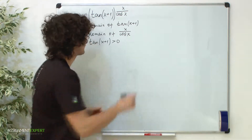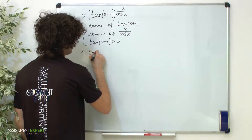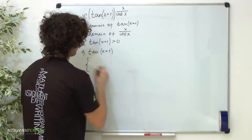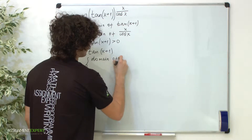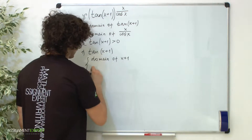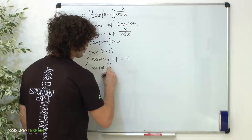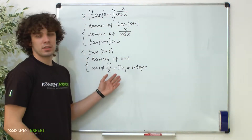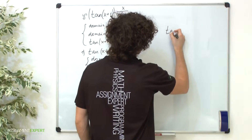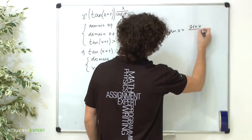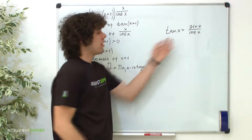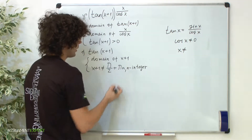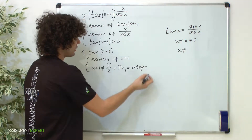Now let's consider these conditions. The first one is the domain of tangent of x plus 1. To find this domain we need to consider a system with two conditions: the first condition is the domain of x plus 1, and the second condition is x plus 1 is not equal to π/2 plus πn where n is an integer. As we know, tangent of x equals sine of x over cosine of x, so this is a fraction. Therefore cosine of x is not equal to 0, and therefore x is not equal to this expression. In our case, instead of x we have x plus 1, and here's how we get this condition.